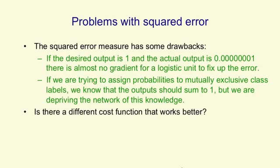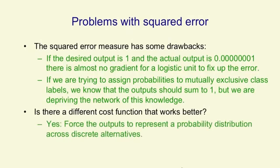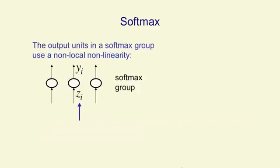So the question is, is there a different cost function that will work better? Is there a way of telling it that these are mutually exclusive and then using an appropriate cost function? The answer, of course, is that there is. What we need to do is force the outputs of the neural net to represent a probability distribution across discrete alternatives, if that's what we plan to use them for. The way we do this is by using something called a softmax.